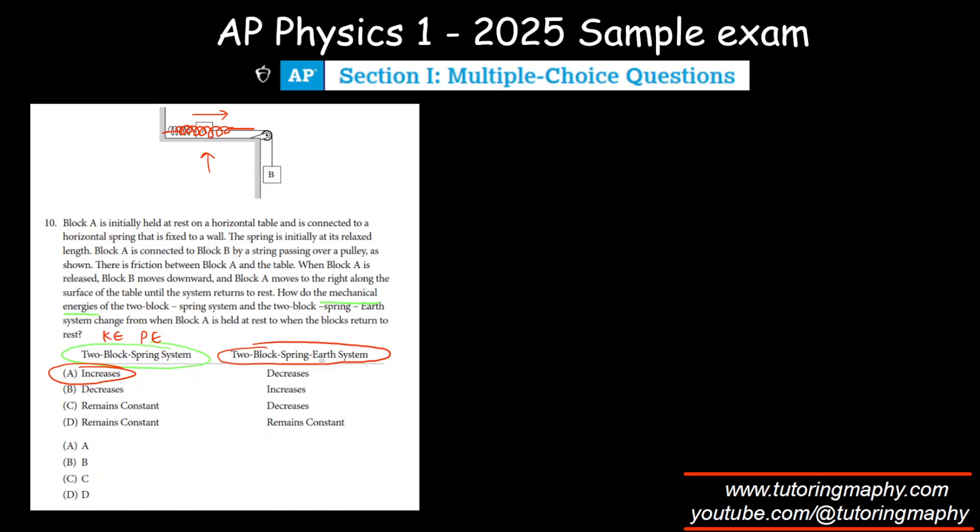And when we talk about two-block spring earth system, we have to see whether that increases or decreases. Now, obviously, kinetic energy is not changing, so we should not be worried about this. Potential energy is increasing, and earth, as in gravity, that's decreasing, right?